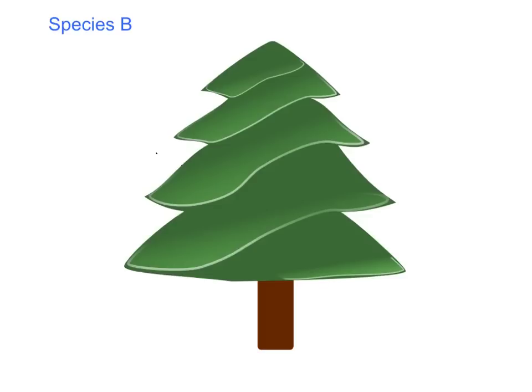We have another species, species B. Species B can really only live in the top branches of the tree. Let's say species B happens to be a slower species. And there are cats in the area that might jump up and eat them if they hang out in those lower branches.